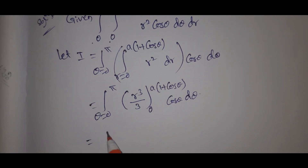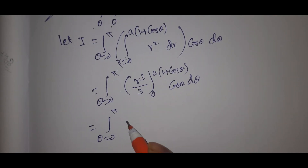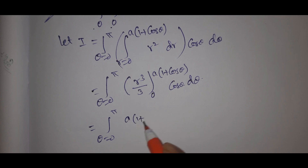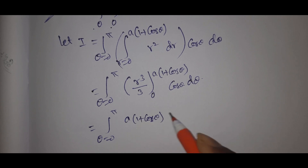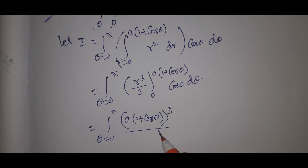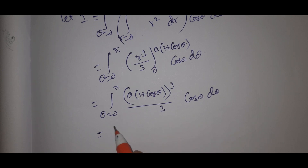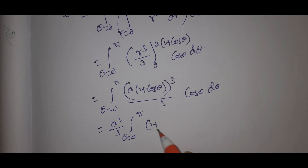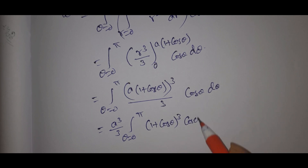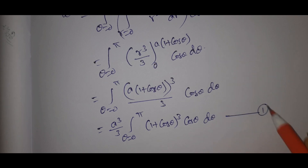First we solve the inner integral with respect to r. That gives θ from 0 to pi: [r³/3] from 0 to a(1 + cos θ), times cos θ dθ. Then we get a³/3 times the integral from θ = 0 to pi of (1 + cos θ)³ · cos θ dθ. This is equation number 1.